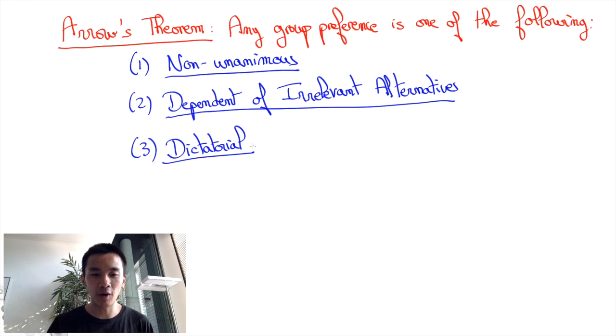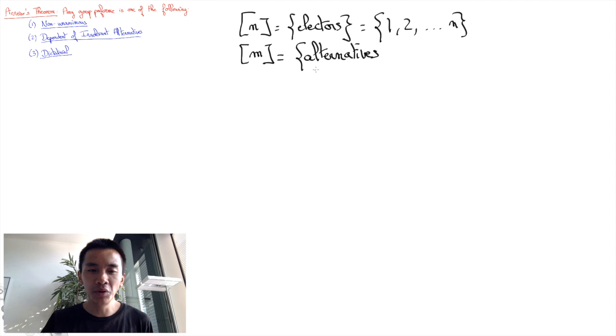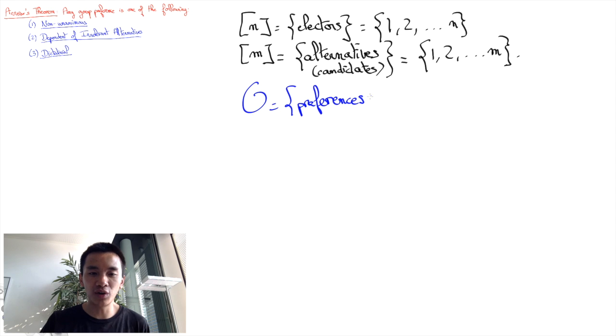Now, from now on in this video, what I will do is to state Arrow's theorem formally. So, we consider a set N of electors from 1 to N and a set M of alternatives. We assume that each elector has a preference over alternatives which is described by a strict order relation over the set M of alternatives.